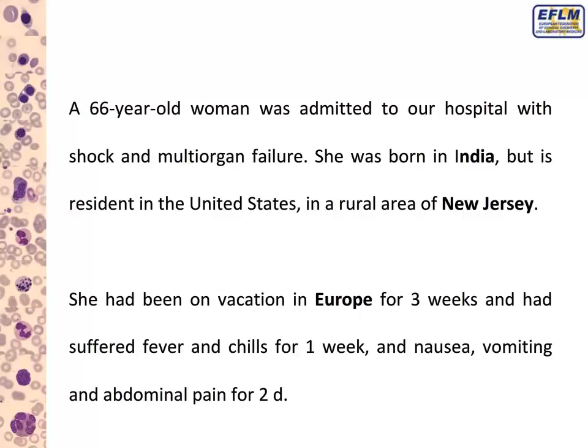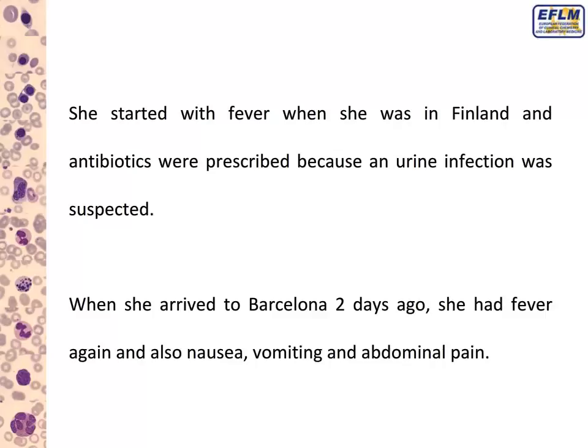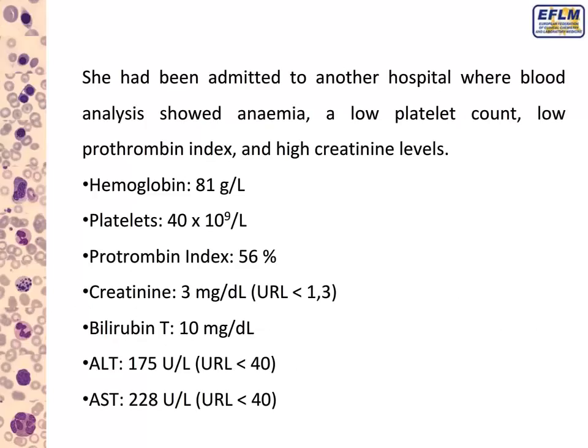It's important to remark that she didn't live in a big city — she was living in a rural area of New Jersey. She had been on vacation in Europe for three weeks and had suffered fever and chills for one week, nausea, vomiting, and abdominal pain for two days. When she was in Finland, she started with fever, and antibiotics were prescribed because a urine infection was suspected. When she arrived in Barcelona two days ago, she had fever again, as well as nausea, vomiting, and abdominal pain.